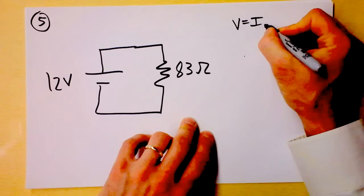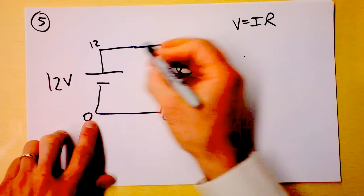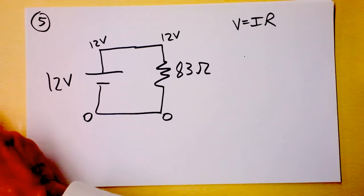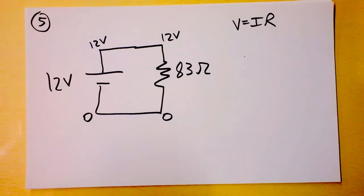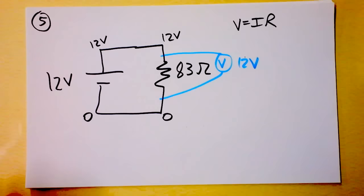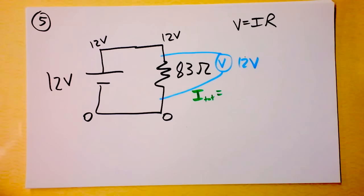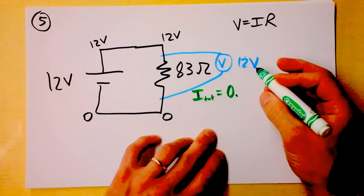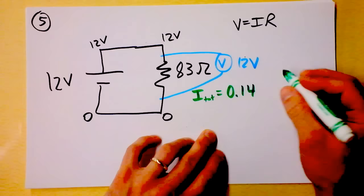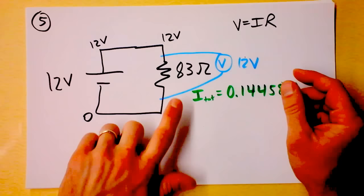It's a very simple circuit now. V = IR, so I go around and define voltages: 0 and 12 volts across the battery. The voltage across the equivalent resistor is 12 volts. The total current is V/R = 12/83 = 0.14458 amps. That's a reasonable amount of current for a circuit — we don't want hundreds of amps or anything like that.